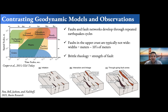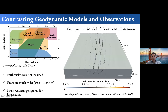Faults in the upper crust are typically not that wide unless you're at the plate boundary scale — something like the Alpine Fault, the San Andreas Fault, or a subduction channel — and the widths are on the order of meters to tens of meters. When I say brittle rheology, I'm basically talking about the strength of the faults: the friction and cohesion. Through geologic time, that strength is probably highly time-dependent, thinking about processes like dynamic weakening and rate-state friction.